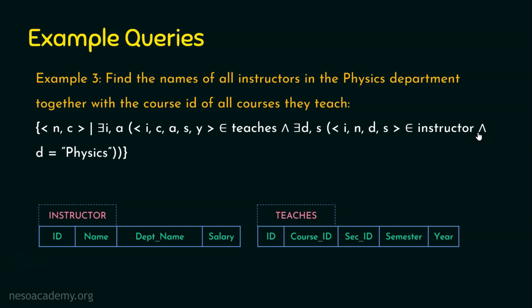The main condition is that the department name domain variable d should equal 'Physics'. Using this query we get the names of all instructors along with course id, retrieved from both the instructor and teaches relations. You may omit s (salary) since it plays no role, but including it won't cause any problem. As domain relational calculus is a non-procedural language, we can even create queries as per our own convenience. I hope example number three is clear.